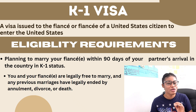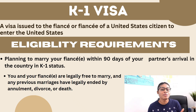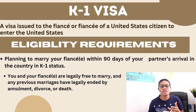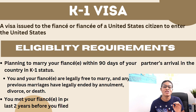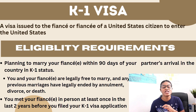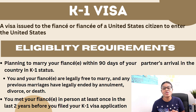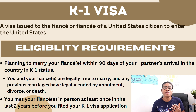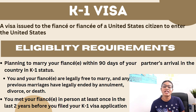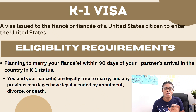The second requirement is that you both are legally free to marry — meaning you are both single. If you have been previously married, that marriage must have ended either by divorce, death, or annulment. The third requirement is that you have met your fiancé within the two-year period. If you are unable to meet due to religious reasons, cultural reasons, or hardship, you must provide evidence to prove your exception.